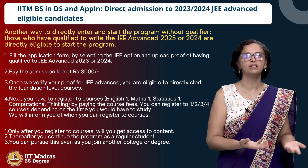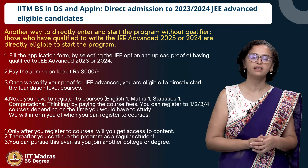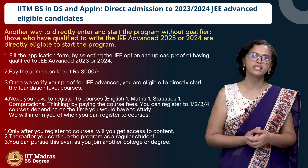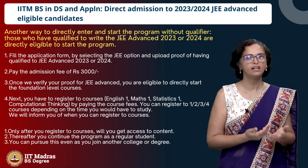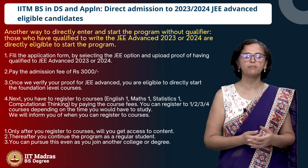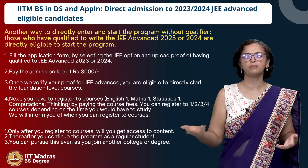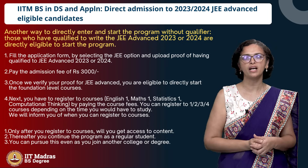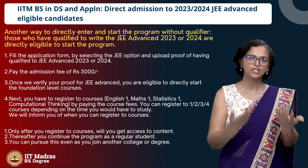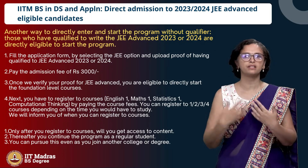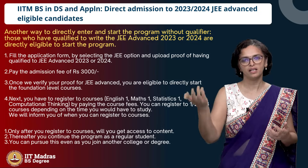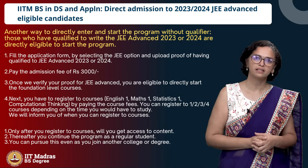If you are a JEE 2024 student who has qualified and are still waiting for college admissions, you can still do the May term with us, the September term with us, and continue to do the program as you wait for admissions and eventually get admitted to another college and pursue another degree too.